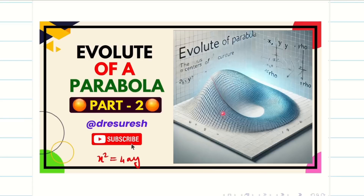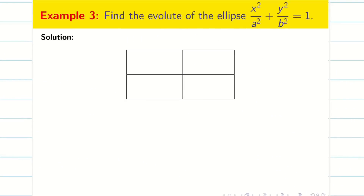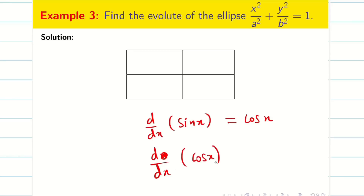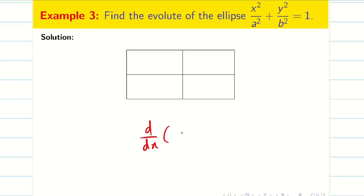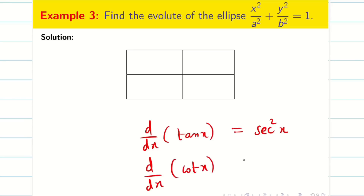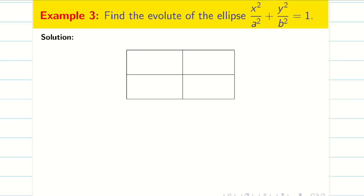Today in this session, we are going to find the evolute of an ellipse. Before going into the problem, we should know some basic differentiation. Differentiation of sin x is cos x — a quick recap. Differentiation of cos x is −sin x, differentiation of tan x is sec²x, and differentiation of cot x is −cosec²x. With this, we start the problem.